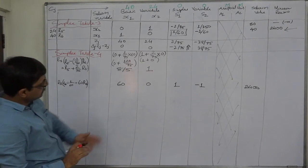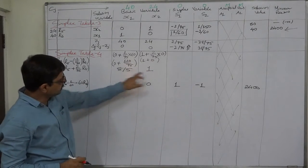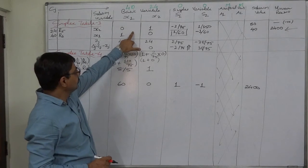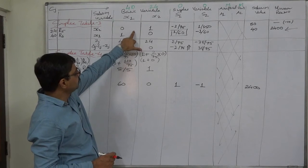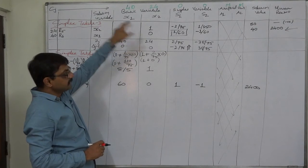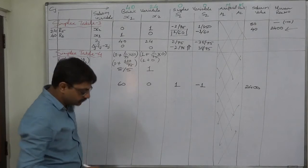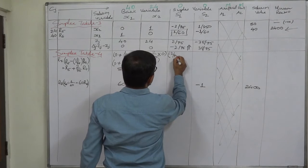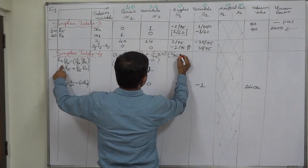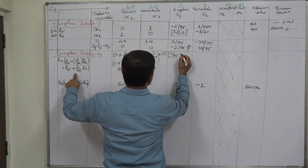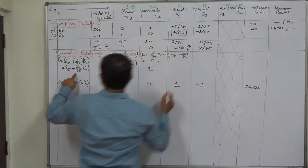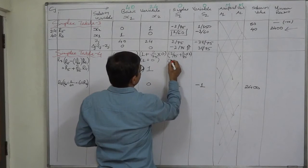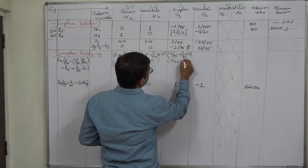Note that there is no unit matrix between X1 and X2 now. In the previous table there was a unit matrix for X1 and X2, but that was not the optimal solution. Now, minus 2/75 is R5 here, plus 2/75 into R8 which is 1 here. So it is minus 2/75 plus 2/75.